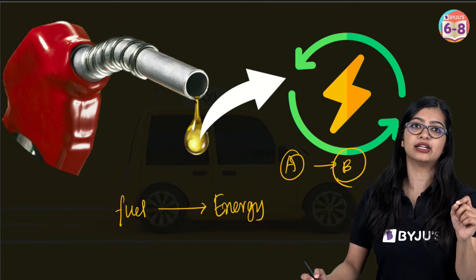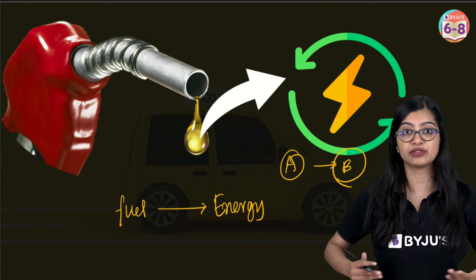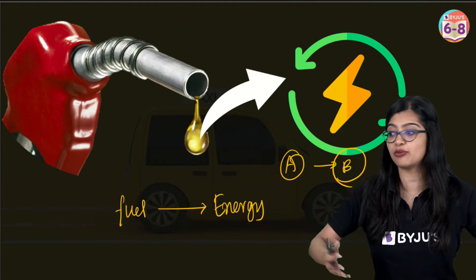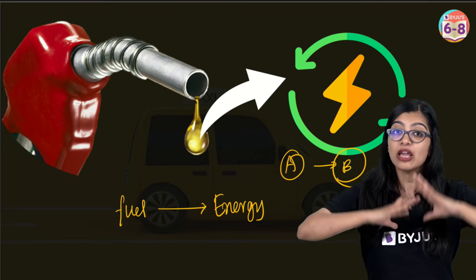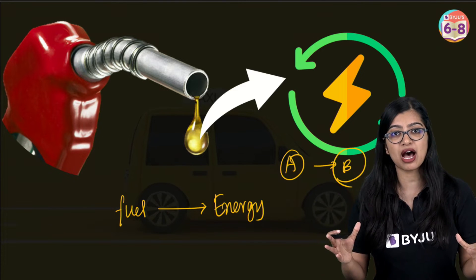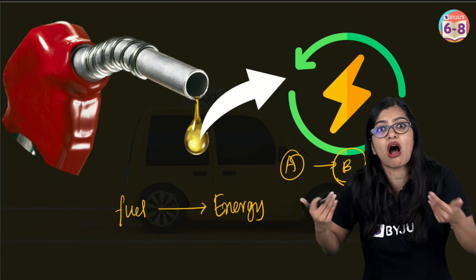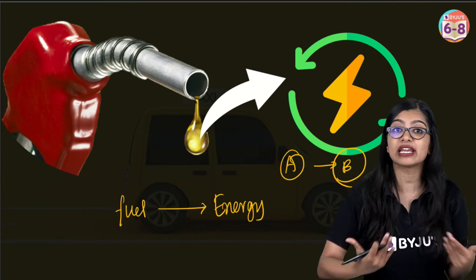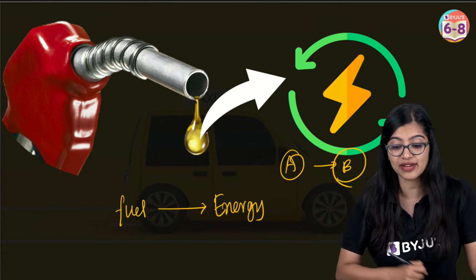Now let's apply the same analogy to the human body. The human body is also made up of different parts — we have the heart, the digestive system, our arms and legs — and they all carry out important functions. But what if we had all these parts and something is still missing? We still need something — we need a fuel that is driving our body so that we can carry out these functions.